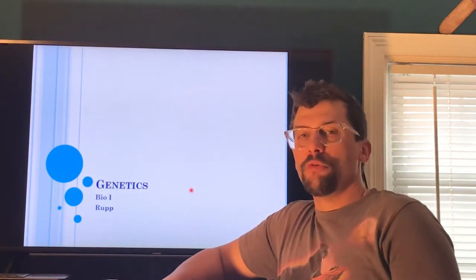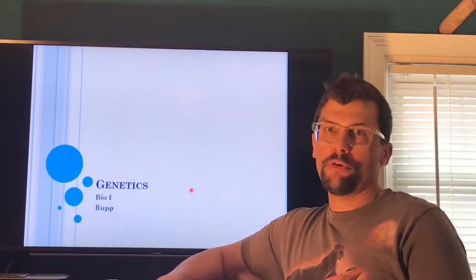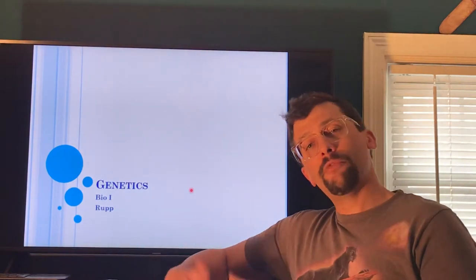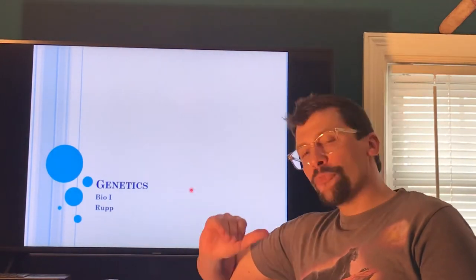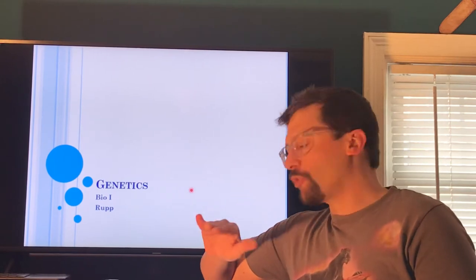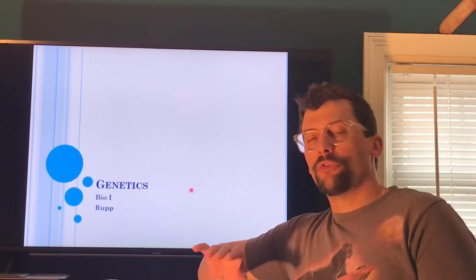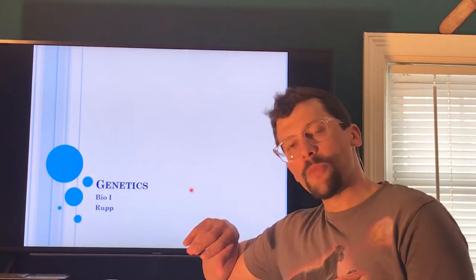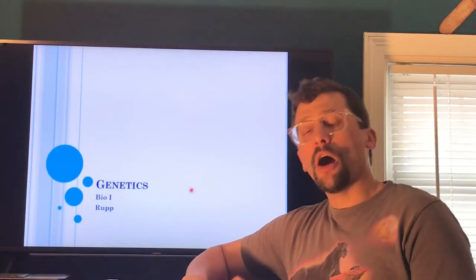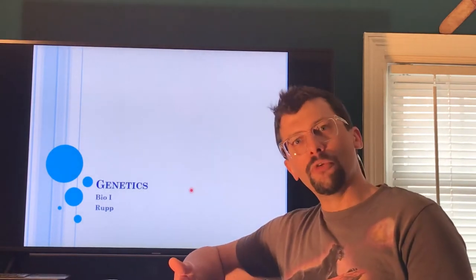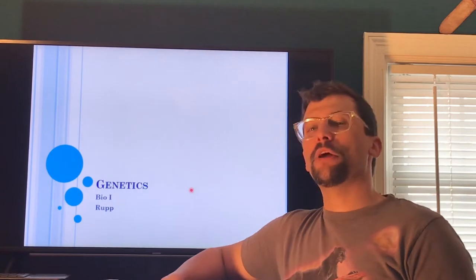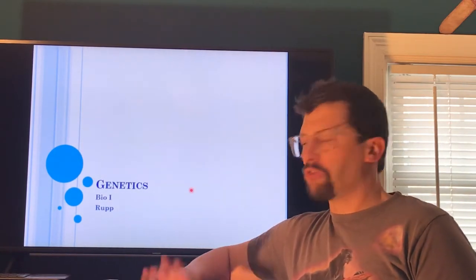Alright guys, so today I'm going to start walking you through a little bit of the genetics notes. We're going to go through some of the history stuff, Gregor Mendel, which you should have learned a little bit about yesterday when you watched the YouTube video for the warm-up. We're going to get up to where we start to talk about Punnett squares, but we're not going to get into how to do them until next week. I'll probably also give you guys some worksheets to do next week — you'll just have to do it on paper, take a picture, and upload your answers to show me that you understand how to do the Punnett squares. I think you guys will like this unit. If you like puzzles and solving things, you'll like this one.